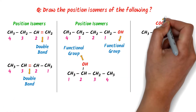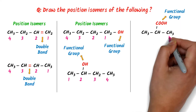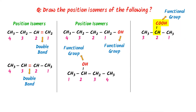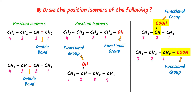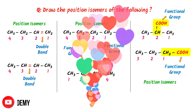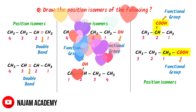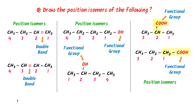Thirdly, in this case, the functional group COOH is present at the second carbon. If I change the position of this functional group and shift it to the first carbon, then I will get another isomer of this compound. This is the position isomer of this compound. Thus, by this way, we can easily draw the position isomers of different compounds.